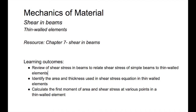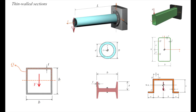Thin-walled elements are basically elements made of sections where the thickness is way smaller than the other dimensions, like I-shapes or T-shapes.